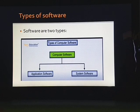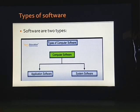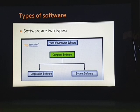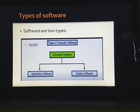Now, softwares are of two types: application software and system software. Application softwares are the most commonly used software. For example, MS Paint, calculator, different video games, music software, movie watching software — these all are application software.